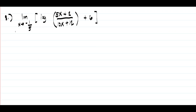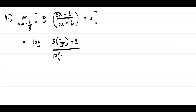On example number eight, we have the limit of log((5x + 2) / (10x + 12)) + 6 as x approaches negative 1/5. To simplify, let us substitute x = −1/5: log((5 times (−1/5) + 2) / (10 times (−1/5) + 12)) + 6. We can cancel the 5s in the numerator.